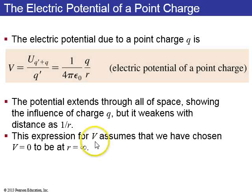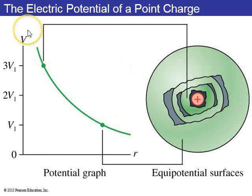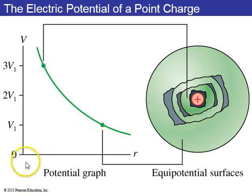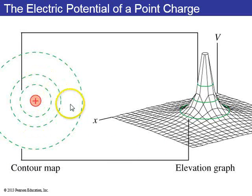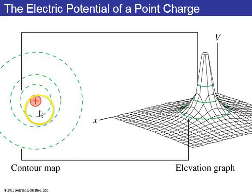We've chosen the zero point of electric potential to be V equals 0 when R equals infinity. The equipotential surfaces are concentric spheres centered on the point charge. The potential graph shows it rising to infinity at R equals 0, then dropping and asymptoting to V equals 0 at R equals infinity. The contour map looks like concentric circles in 2D. The electric field points radially, always perpendicular to these equipotential surfaces — outward in this case.